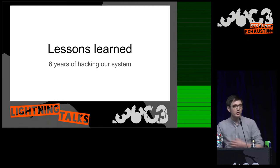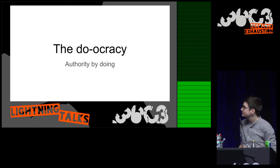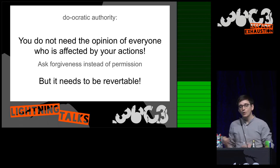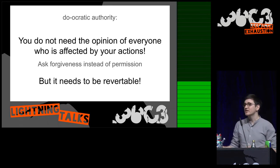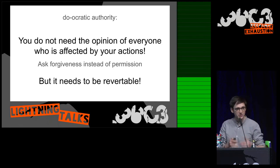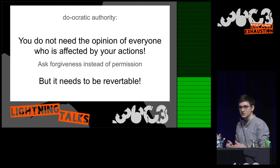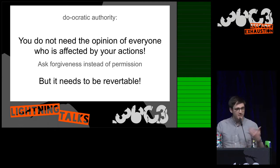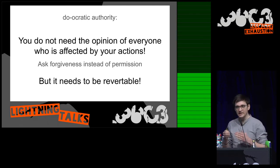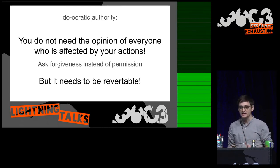We've been using this system for six years, so I'm going to talk about some of the lessons learned. The first is doocracy. Specifically, in a doocracy you do not need the opinion of everyone who is affected by your action. If you are the person who does something, then you are the person who decides how it should be done — even if you're not the most competent person or your solution isn't the best.